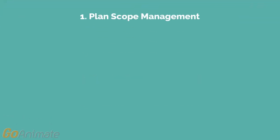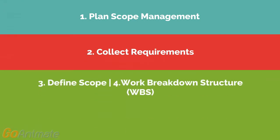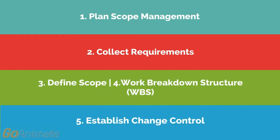In the scope planning process, we have five main points to go through. Number one is plan scope management. Two, we collect requirements for the project. Three, we define the scope. Four, the creation of a Work Breakdown Structure, or WBS. And five, we establish change control.